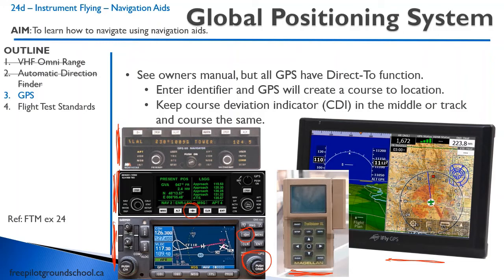These GPS units have really complex functions, especially the Garmin 430. When you go flying with a new GPS, familiarize yourself with all the features by reading the owner's manual. You can usually download the manual, and learn things like how to do flight plans — so instead of just going direct to everywhere, you can go point to point and it automatically sequences along your flight plan. Let's watch a video of using the direct-to function and tracking with GPS.